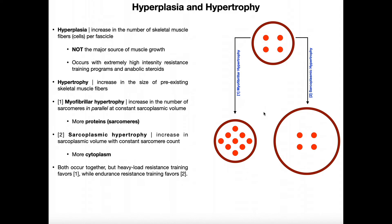Sarcomeres increase the contraction force of the muscle. So if you want to be able to generate more force — meaning you want more strength — then you're going to need more sarcomeres. They are generally added in parallel for increases in force. That is myofibrillar hypertrophy.